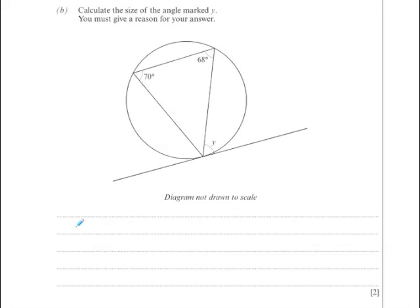You know, I'm not going to go into a lot of explanation here, but basically using the alternate segment theorem, y is equal to 70 degrees.